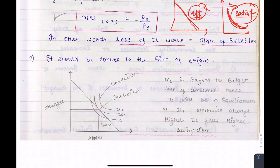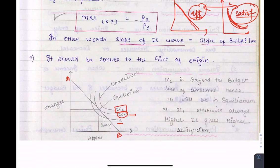Looking at this diagram, we have taken budget line AB and different IC curves. At IC1, we will get equilibrium because it is tangent to the budget line. We want to increase our satisfaction to IC2 but we cannot afford it. And IC1 represents lower satisfaction. So where the IC curve is tangent to the budget line, that will be our equilibrium point.